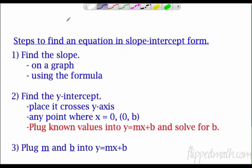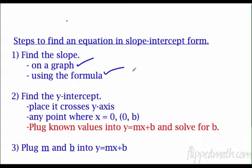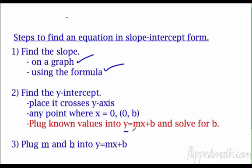Let's look at the steps. Find the slope — either on a graph or using the formula: y2 minus y1 over x2 minus x1. We're going to find the y-intercept. Last time we did it by looking at the y-axis, and we're still going to do that if possible — look at any point where x equals zero. But now we have a third option: plug known values into our equation y equals mx plus b. We'll know a y, an m, and an x, and solve to find our b, then plug those back into the equation.